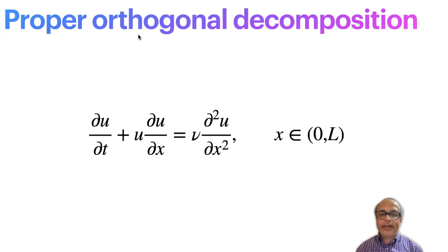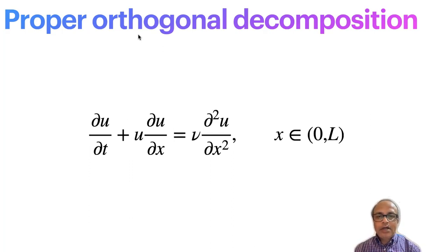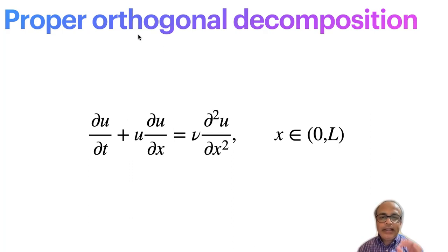Then I apply Singular Value Decomposition to that matrix. When I take the SVD of a matrix, the left singular vectors give me a set of orthogonal vectors. Those vectors can be used to span each column of my original matrix — that is, each column can be written as a linear combination of the left singular vectors. The singular values and right singular vectors represent the coefficients and other properties.